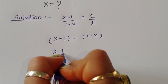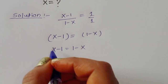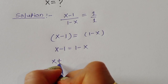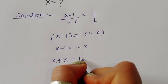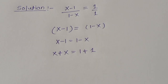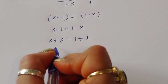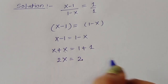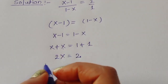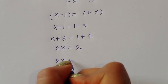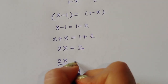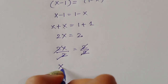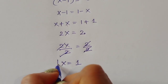We can write x minus 1 is equal to 1 minus x. Rearranging: x plus x is equal to 1 plus 1, so 2x is equal to 2. To find the value of x, we divide both sides by 2: 2x divided by 2 is equal to 2 divided by 2. The 2s cancel, giving x is equal to 1.